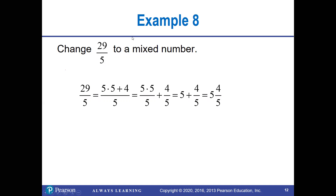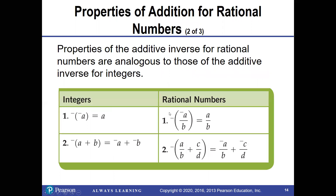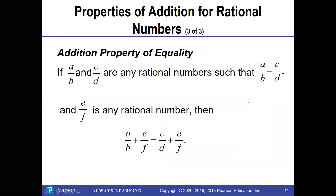Properties: the additive inverse means if you take a rational number and add its opposite, you always get zero — for example, 1/2 + (−1/2) = 0. Properties of additive inverse for rational numbers are analogous to those for integers: a negative times a negative is positive, and if you distribute a negative, the terms become opposites. These work the same way.